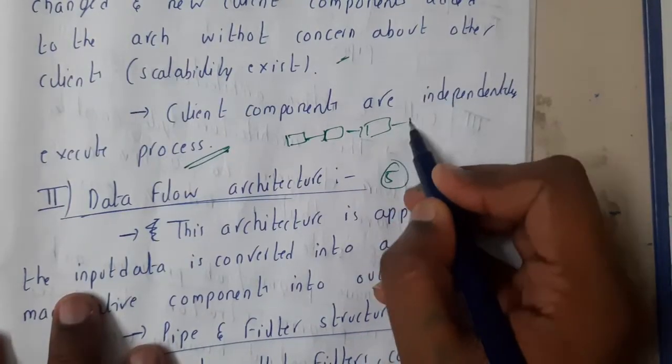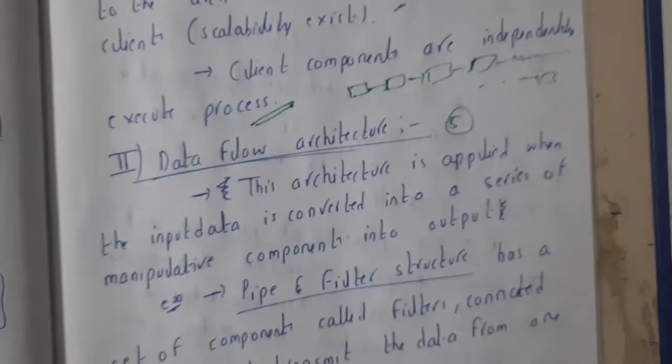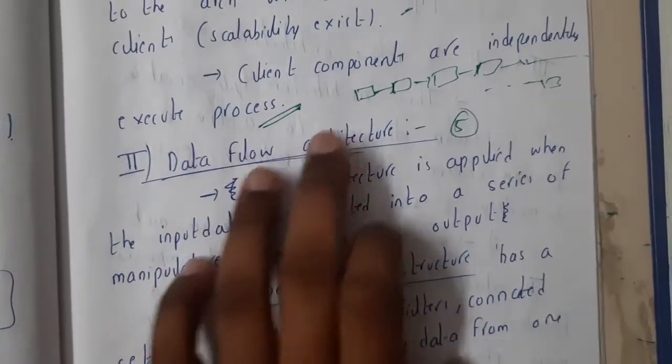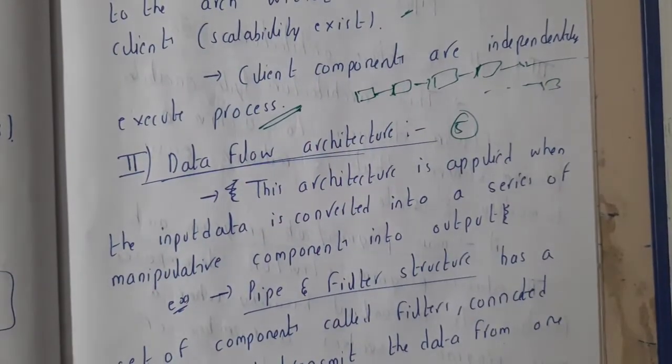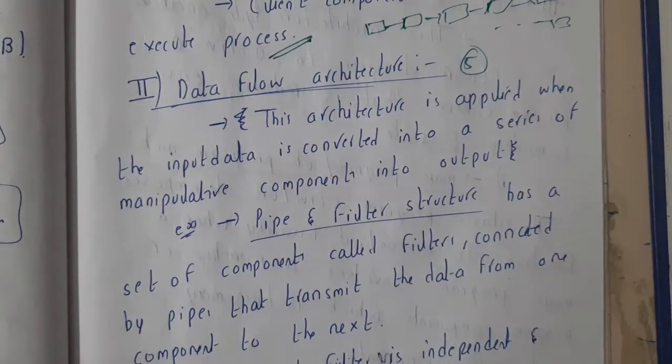And again you will be passing it into something, and this process continues. So basically, you are iteratively doing the thing. That is nothing but data flow - you will be deciding the flow, how it should go. That comes under the data flow architecture.